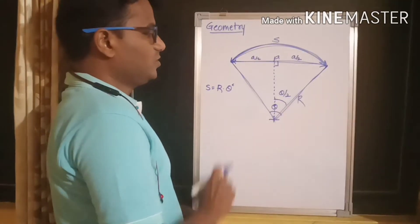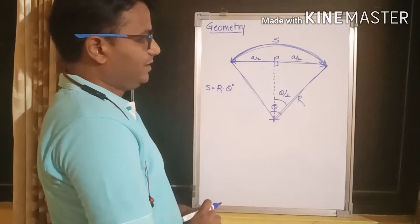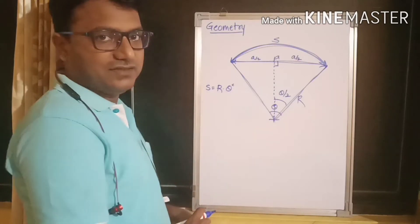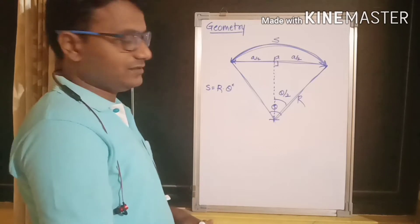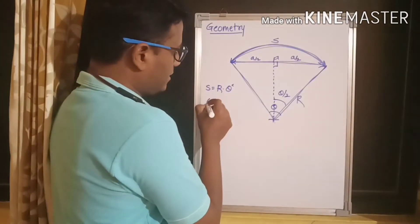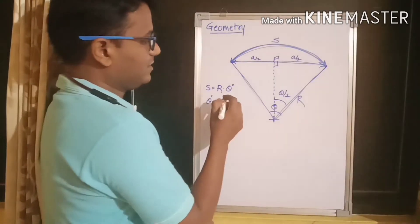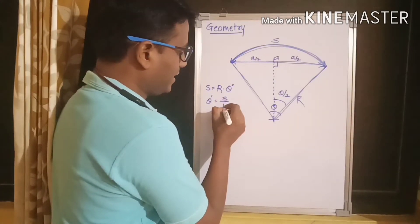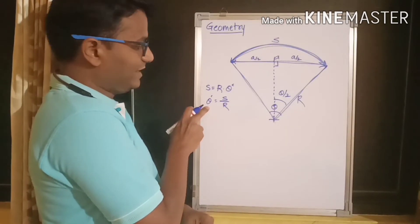Now, if you want to calculate the arc length and you don't know the angle in radians or you have the angle in degrees, so how to convert that into degrees? So, theta will be equal to, I take this r on the other side, so it becomes s by r.